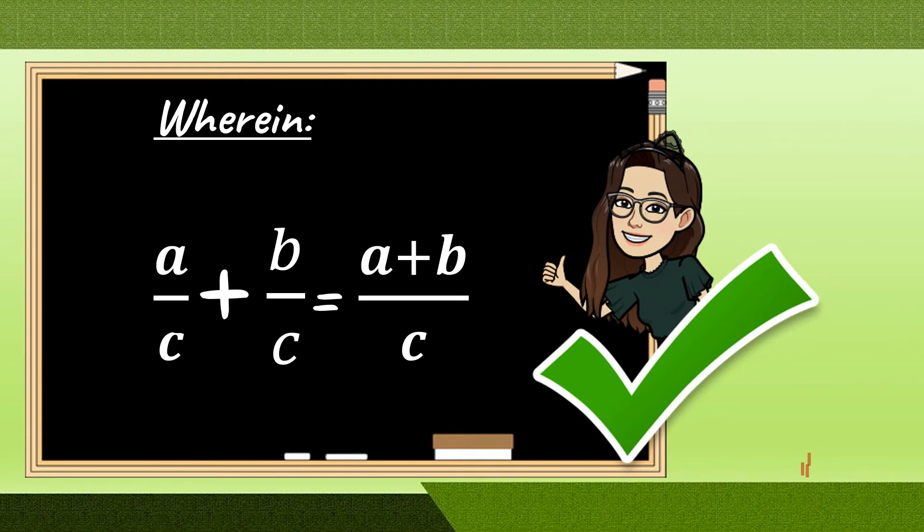It's just like this. Where A over C plus B over C is equal to A plus B over C.